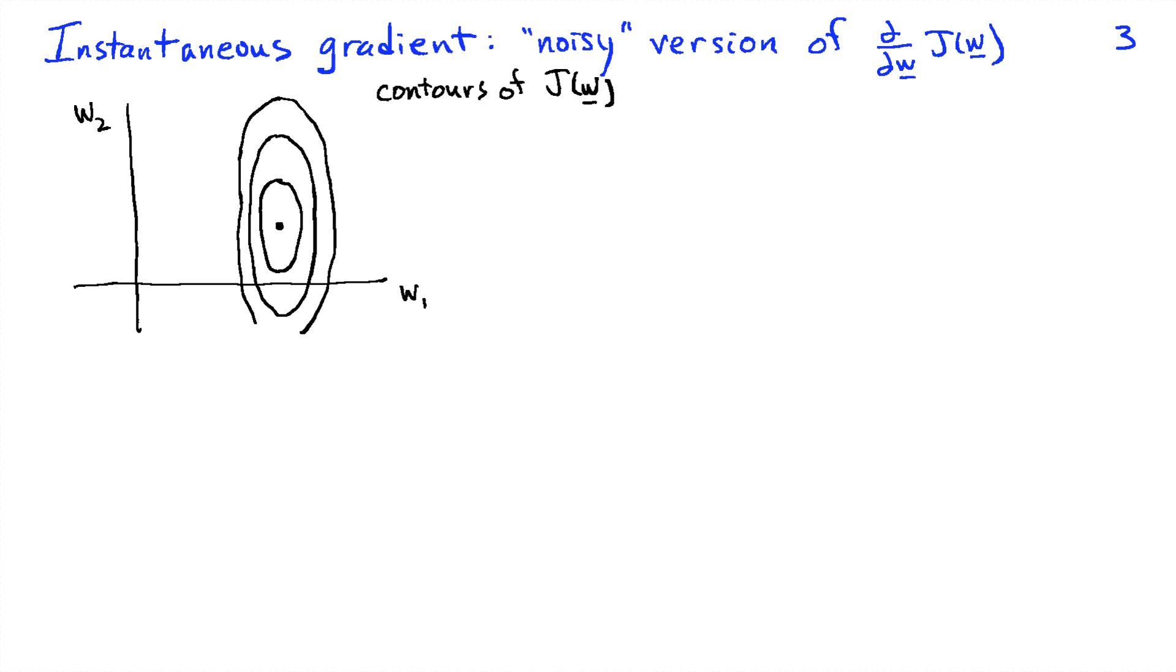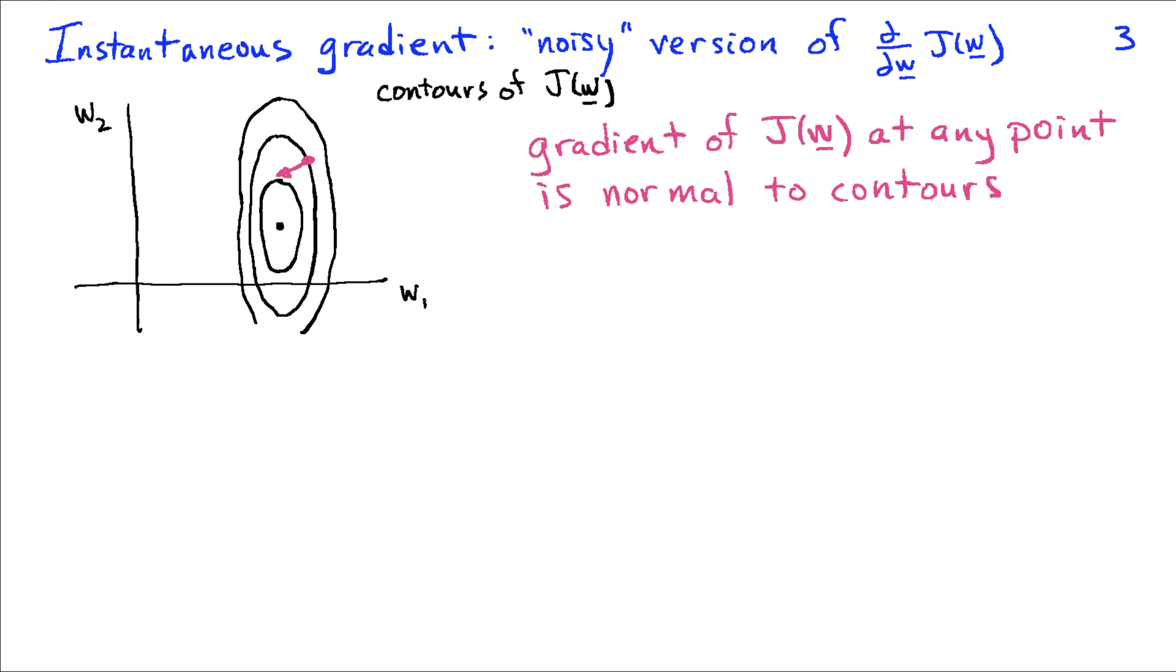So now that we have this basic shape in mind for our cost function, remember that we are using the instantaneous gradient in the LMS algorithm. For our intuitive insight here, we're going to view that as a noisy version of the actual gradient of this cost function. We've got our contours of constant value for the cost function, so the gradient at any particular point W is going to be normal to the contour. If we start at some point here, and we want to go in the negative gradient direction, we're going to go in the direction of the red arrow, which is downhill.